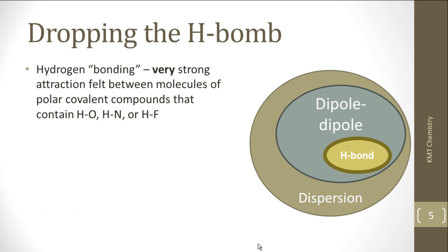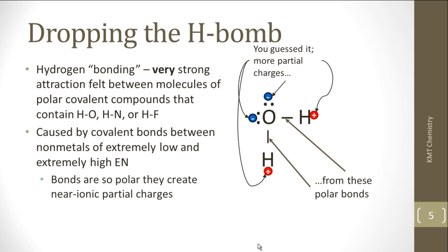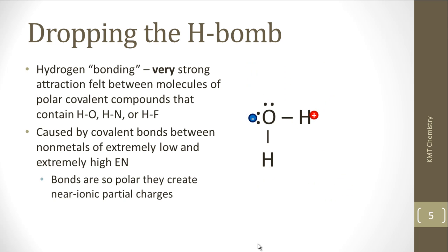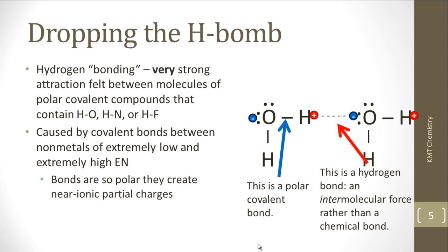The final intermolecular force is the hydrogen bond. It's not really a bond — it's actually a very, very strong dipole-dipole attraction, strong enough to be classified separately. A hydrogen bond comes about when you have an H-O, H-N, or H-F bond. You're looking for two elements that have a very large electronegativity difference, which causes a very polar bond and a very high partial charge. These partial charges are so high that they're close to ionic in magnitude. When two of these molecules come close to each other, the negative end of one oxygen will attract the positive end of one hydrogen on individual molecules, causing a strong attraction between them. Note the difference between the covalent bond and the intermolecular force.